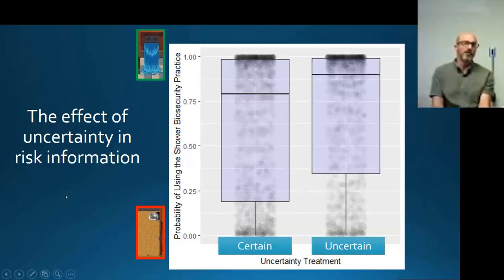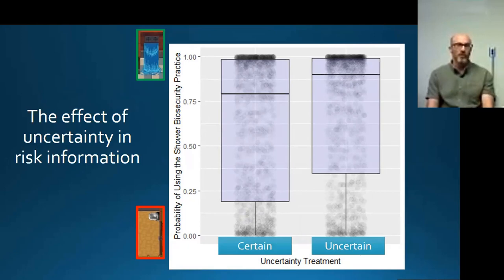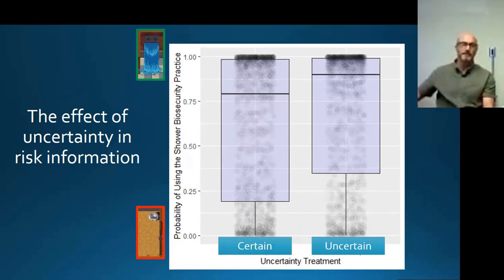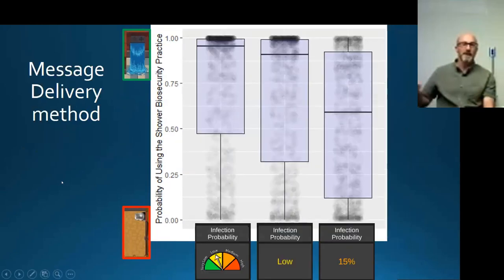Another thing we looked at is how uncertainty plays into decisions. When we told players the risk information was absolutely certain, they actually took more chances than when we gave the same information but said we weren't absolutely sure it was correct. What we see is that people are what's called uncertainty averse — they want to take less risk when they are uncertain.